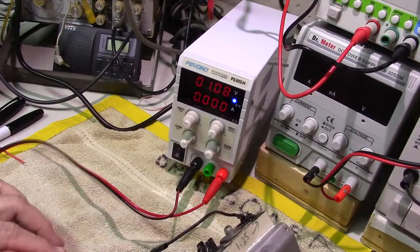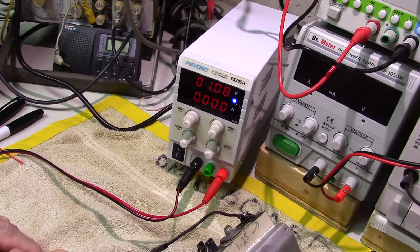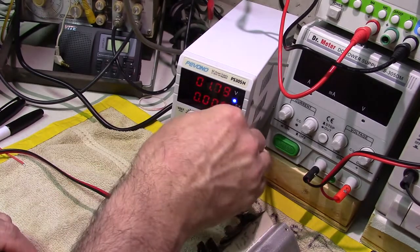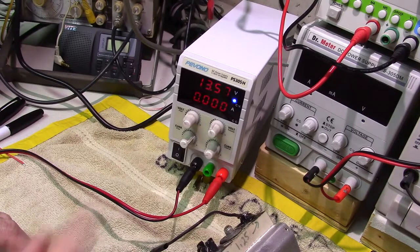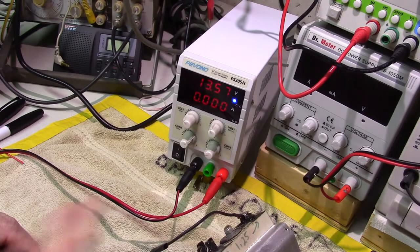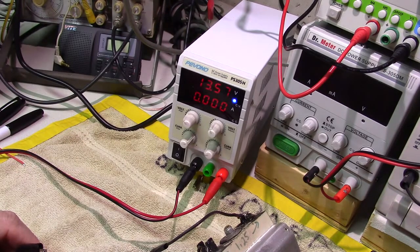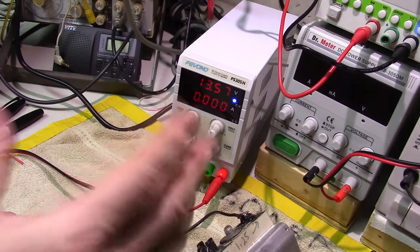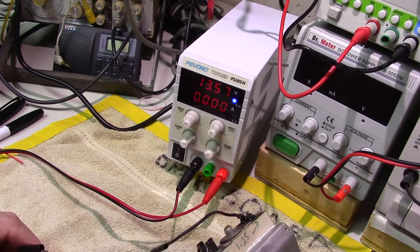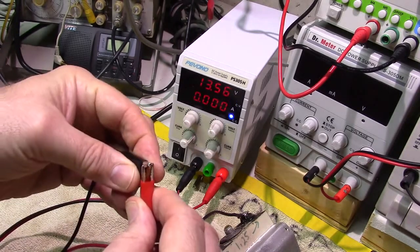So let's demonstrate constant current mode on this Pivono PS305H. You're always in constant voltage mode because you can always change the voltage and it will regulate that and be in constant voltage mode. What about constant current mode? Let's say you have a load or a device, a light bulb or test circuit, that you want to have a fixed amount of current. Now you never want it to exceed one amp of current.